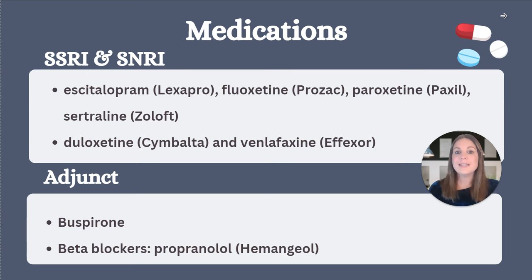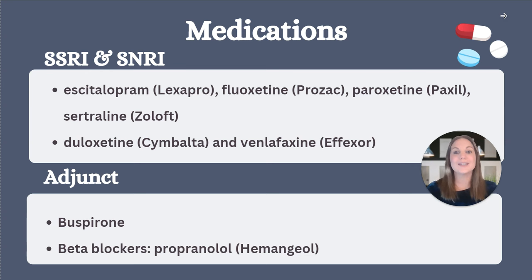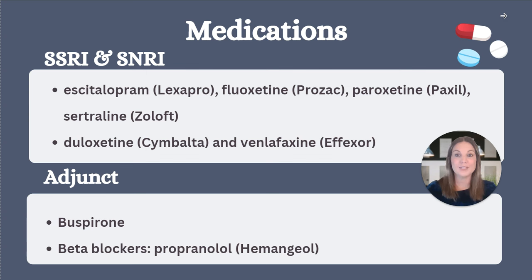We also have some second-line medications that we can use for the treatment of anxiety. Buspirone is a medication that can be dosed multiple times per day. Similar to an SSRI or SNRI, buspirone can take several weeks to reach its full effect. However, some patients can feel some relief of symptoms more quickly, even as soon as the first dose. It is also sometimes used as an adjunct medication on top of an SSRI if the SSRI alone is not enough to resolve anxious symptoms.